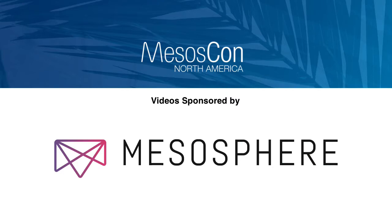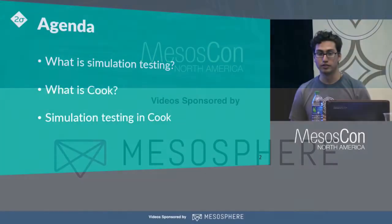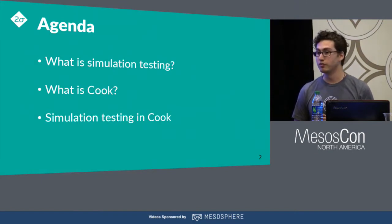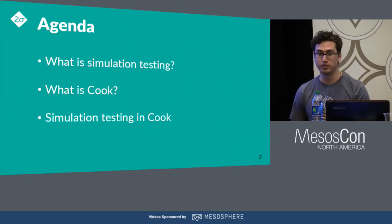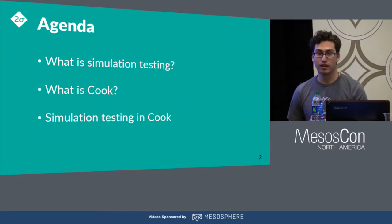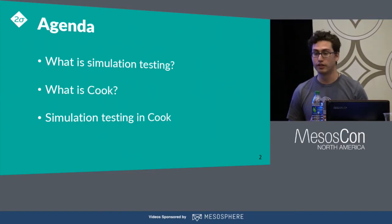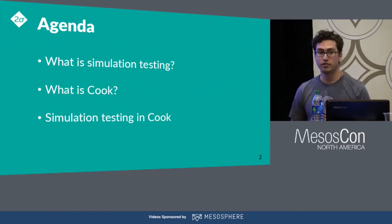My plan for this talk is to first tell you what simulation testing is in general and give you a sense of why you might want to do it. Then tell you a bit about Cook, our open-source batch scheduler, and tell you why we built Cook in the first place, and then tell you some of the more recent challenges that caused us to consider building a simulator. Then tell you how we built the simulator and the trade-offs we made, and go over one of the cases in which we used the simulator to improve the system.